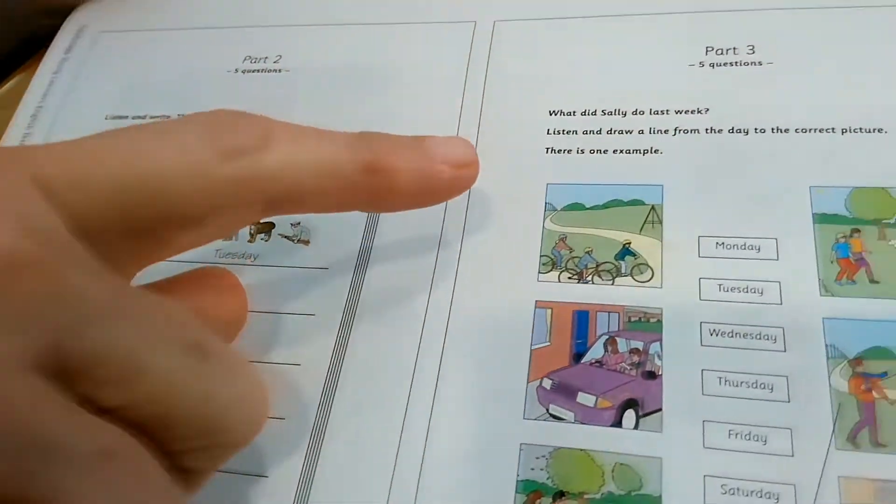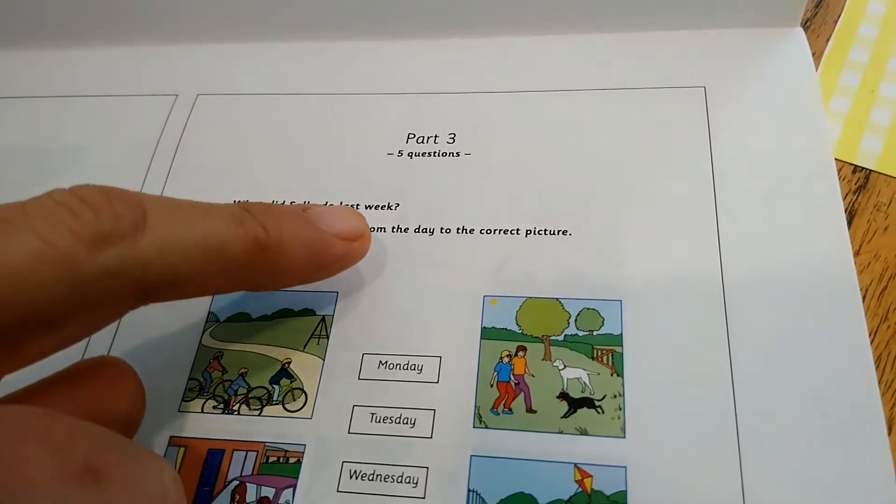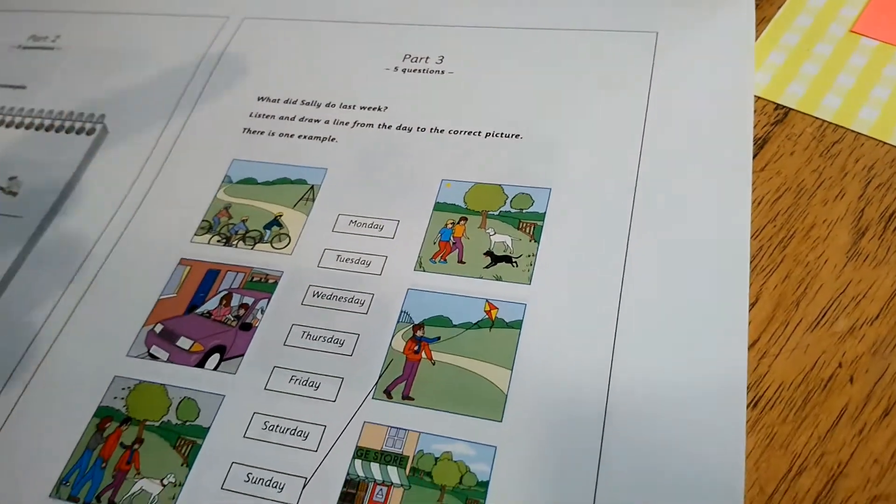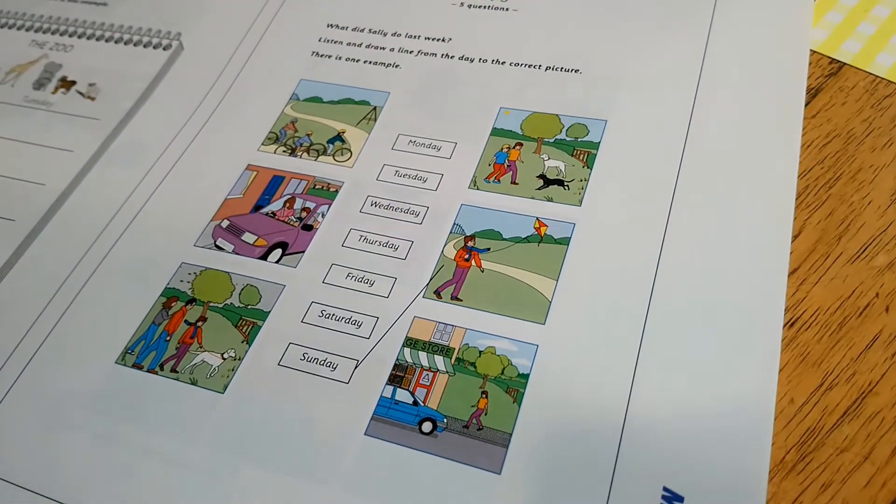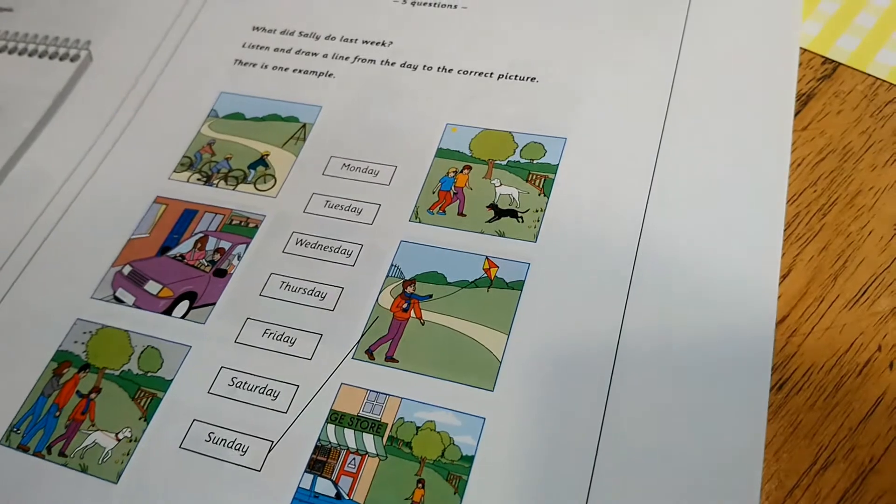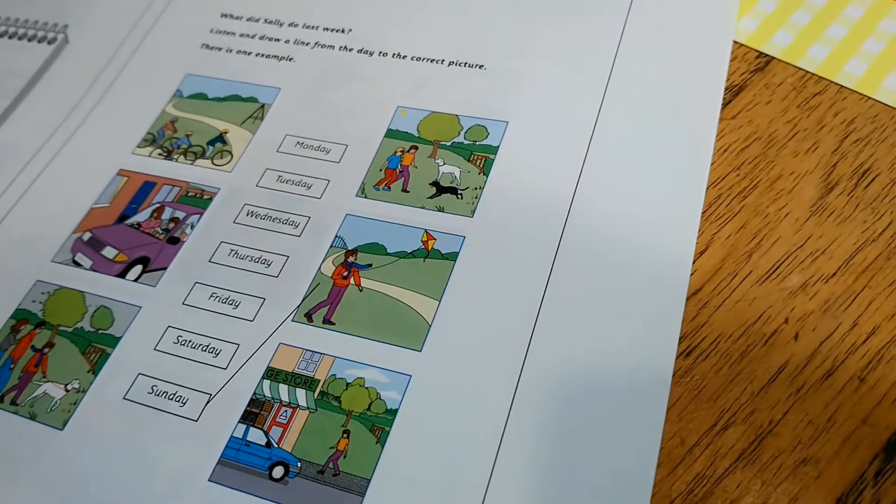Part three. What did Sally do last week? Listen and draw a line from the day to the correct picture. As you can see there is always an example for you to look at. You have the days of the week and different pictures. So you have to match the day of the week with the correct picture.